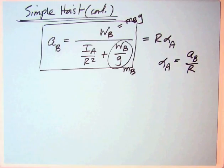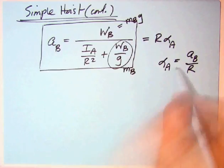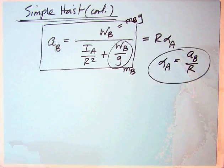Once you've calculated A sub B, the acceleration of block B, then that's R alpha A. Solve for alpha A by just doing that divided by R.